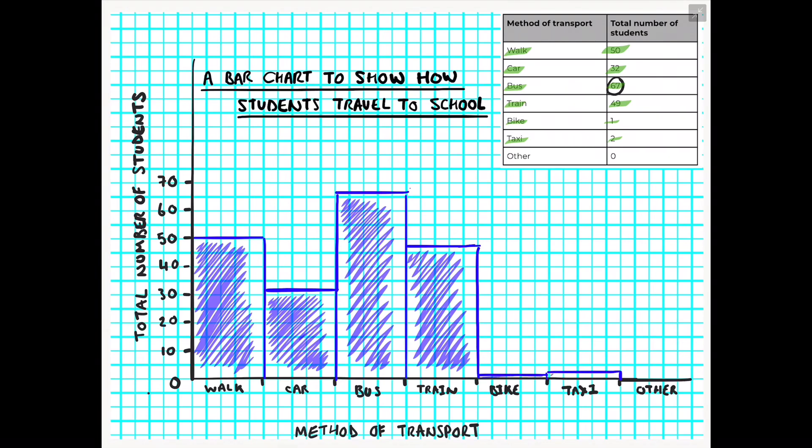I have only shown method of transport as my one category of data here, in which case really all my bars should be the same color. If we were looking to create a bar chart that needed different colors because we have different categories, then that would be more useful.